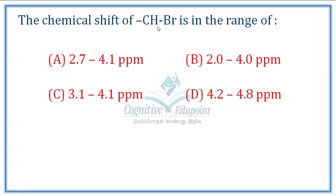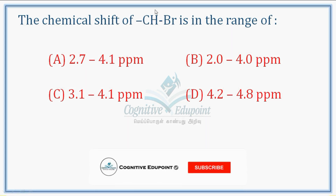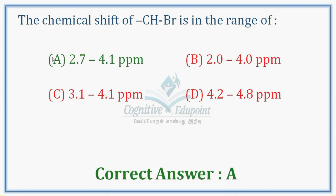Next question: The chemical shift of CHBr is in the range of? The chemical shift of this hydrogen depends on the functional groups on either side — one side has a Br group and the other could be alkyl, acid, or cyanide groups with electron withdrawing or donating effects. The CH will be roughly in the range of 2.7 to 4.1 ppm.